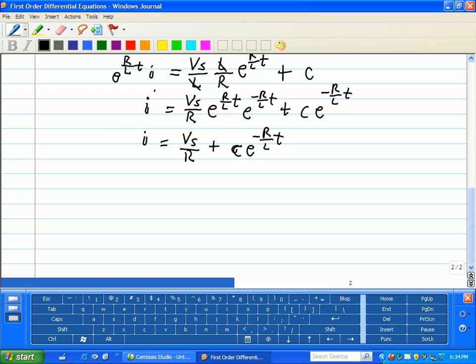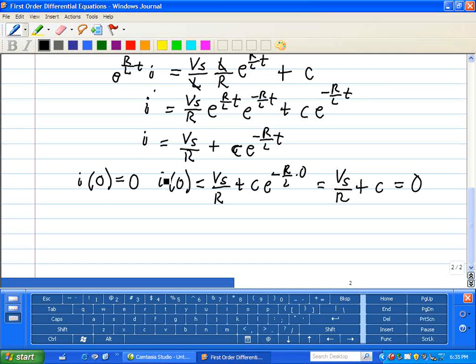And suppose our initial current going through that resistor and inductor is zero at time t equals zero. So we can calculate our constant c. We'll apply t equals zero. So that's plus c, e to the minus R/L times zero. Or Vs over R plus c equals zero. Since the current through that inductor and resistor is zero, c equals negative Vs divided by R.